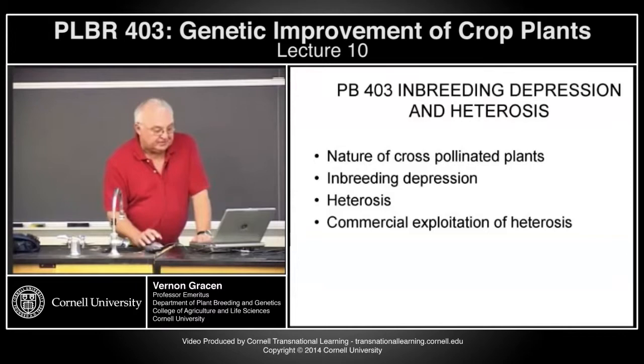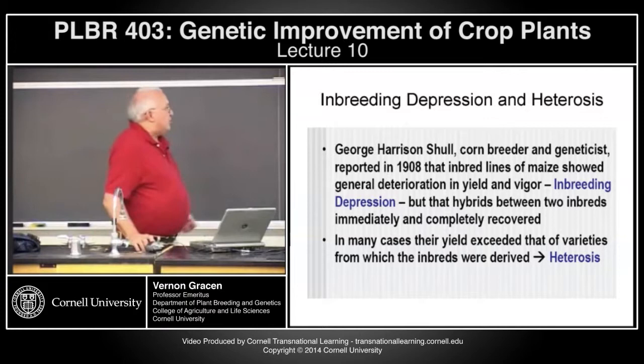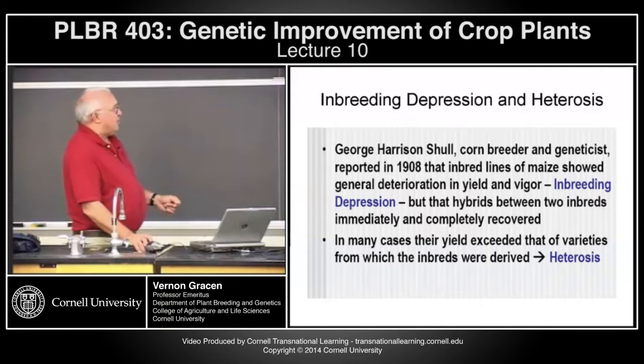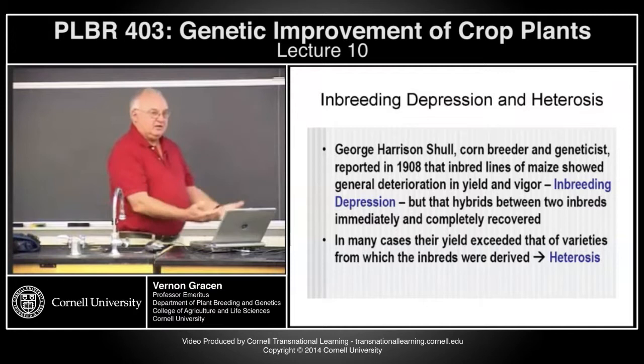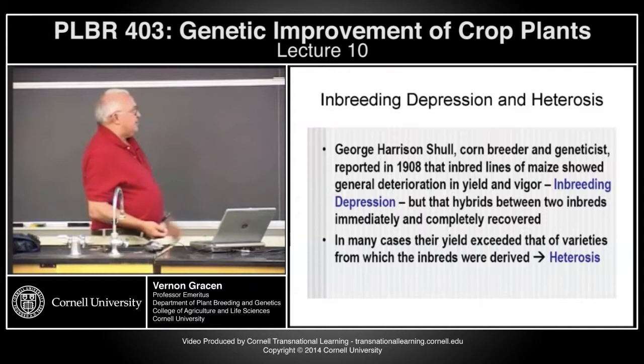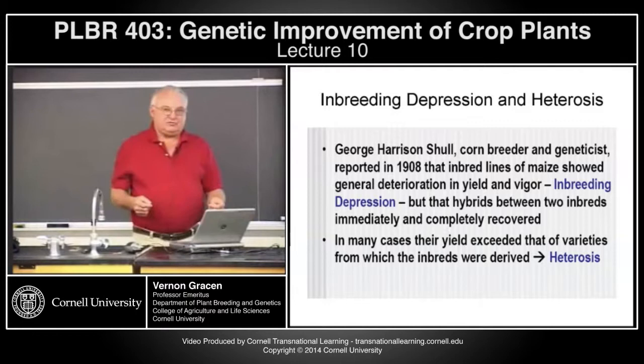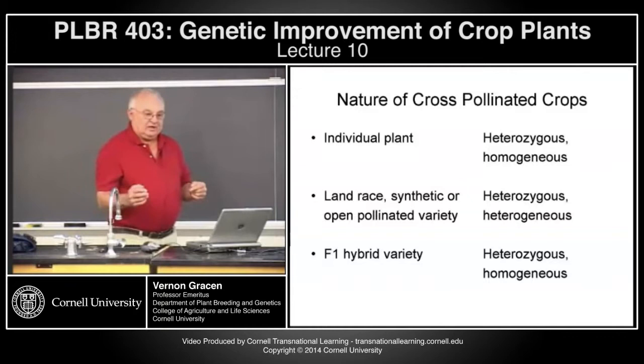Then we'll talk quite a bit about the commercial expression of heterosis. George Harrison Schull in 1908 observed that when you self-pollinate lines of corn, the plants get very, very small — that's called inbreeding depression. But if you cross-pollinate them again with something unrelated, they restore their vigor and size immediately. In fact, in many cases the yield of those cross-varieties out-yielded the inbreds from which they were derived. He called that heterosis.